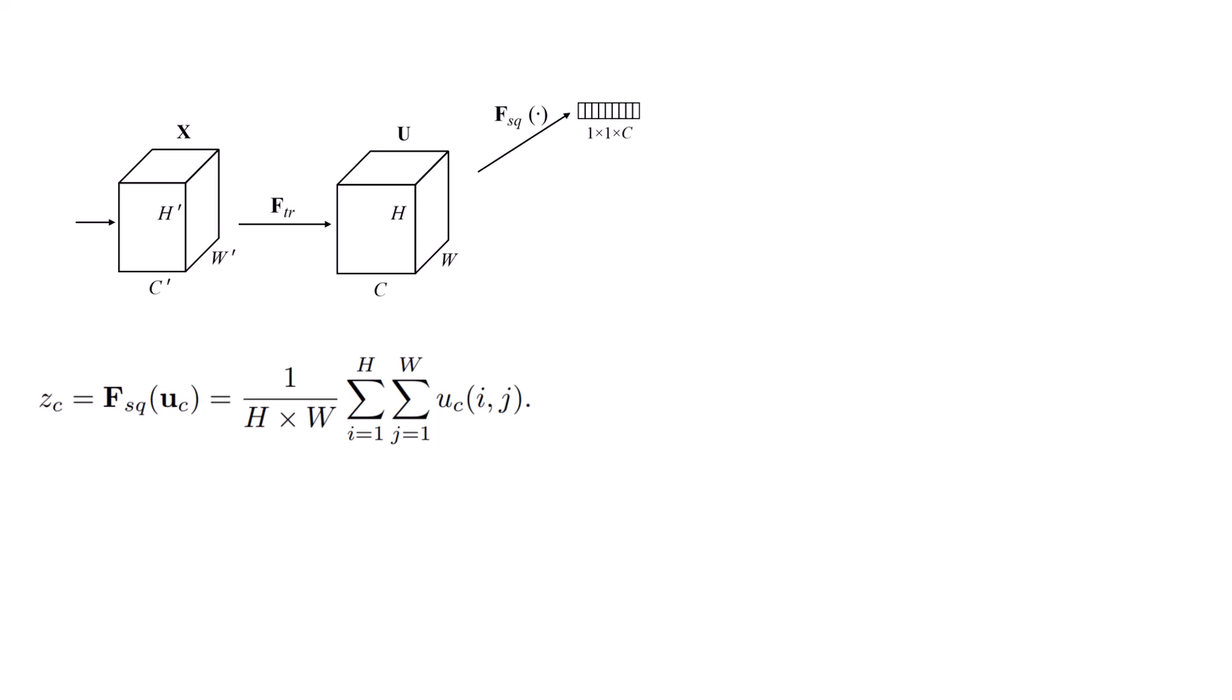But having this representation, it's not enough to know whether one channel is more important than the other one. So, the authors proposed excitation operator, which acts sorta like an attention layer to say which channel is more important than the other one. And they used this equation for the excitation operator.